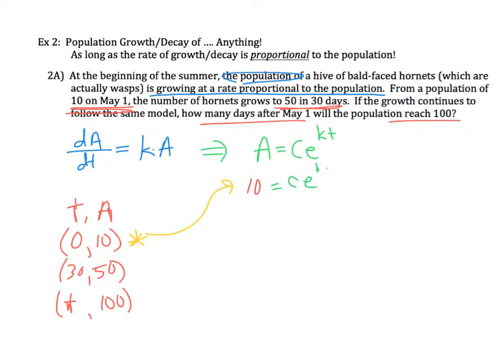I'm going to put in 10 for the amount equals Ce^(k times 0). I'm going to go into algebra mode. So I've got 10 equals Ce^0. Zero times anything is 0, and e to the 0 power, anything to the 0 power, is just 1. So my C comes out to be just 10.